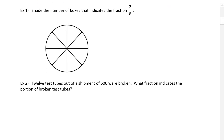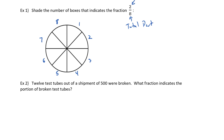I'd like you to look at example number one. Shade the number of boxes that indicate the fraction two over eight. So my numerator, the top number, is two, and the denominator is eight. We have eight parts making up the whole — that is the total parts — and we're going to shade in the parts we're using. We shade in one, then two. So now this circle represents two eighths.